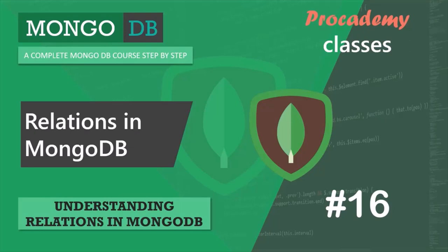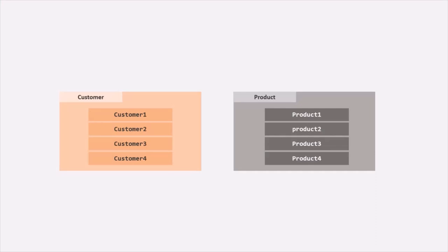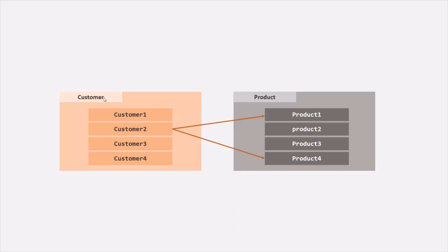And these collections might have some relation. For example, let's say we have a customer collection where we are storing the customer details, and we also have a product collection where we are storing some products. Each customer in the customer collection might have purchased some products from our application. For example, customer 1 has purchased product 1 and product 3, customer 2 has purchased product 1 and product 4, customer 3 has purchased product 2, and customer 4 has purchased product 3 and product 4. We want to keep track of which customer has bought which products, so we might want to relate our customer collection to the products collection.